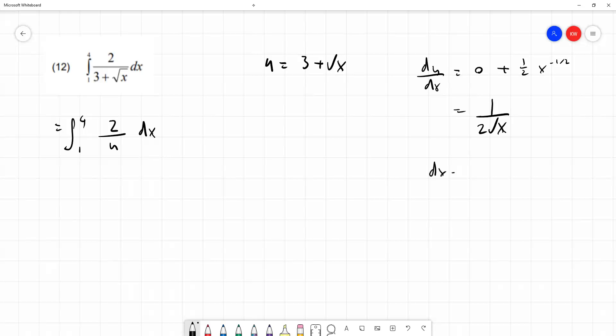So we have dx equals 2 root x du, and of course if we're changing from dx to du we need to change our limits as well. So if x equals 4, u equals 3 plus root 4 which is 5. When x equals 1, u equals 3 plus root 1 which is 4. These are our new limits.